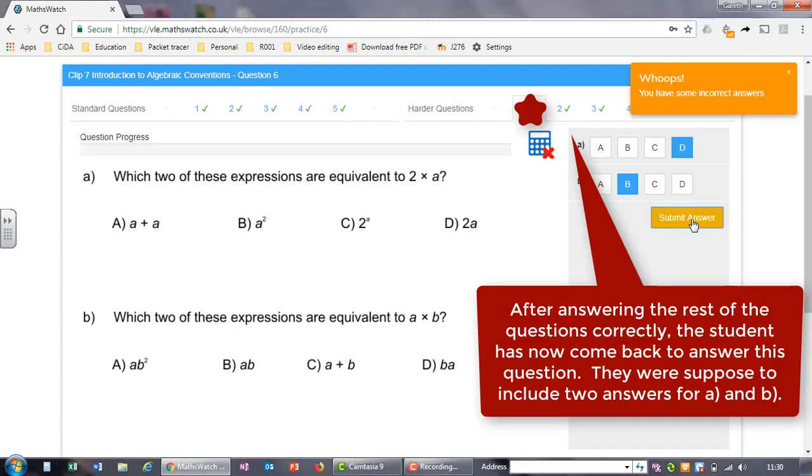After answering the rest of the questions correctly, the student has now come back to answer this question. They were supposed to include two answers for A and B.